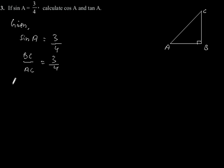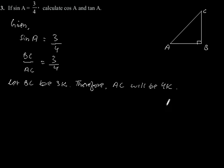Now let BC be 3K. Therefore, AC will be 4K. Here we have considered K is a positive integer.